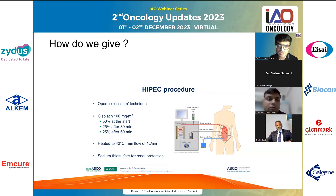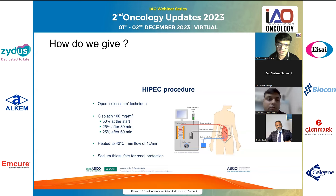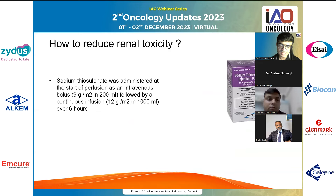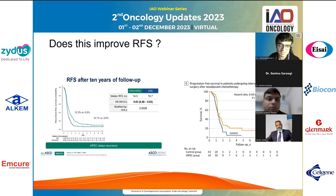This is how HIPEC is performed using the open colosseum technique: 100 mg per meter square cisplatin — the same dose given IV — heated to 42 degrees centigrade with a flow of one liter per minute. Fifty percent is split as 25 and 25. Sodium thiosulfate is given for renal protection, and with it, renal toxicity is definitively reduced.